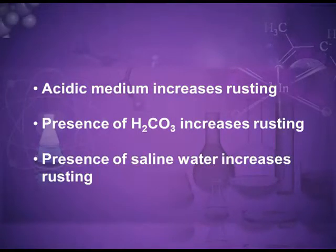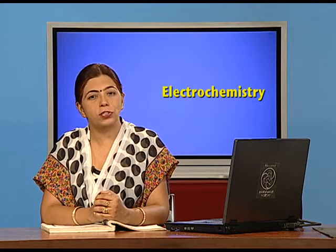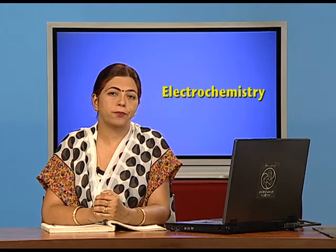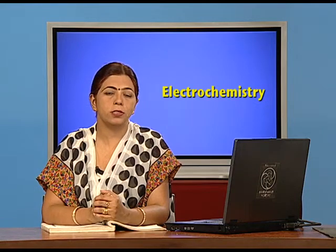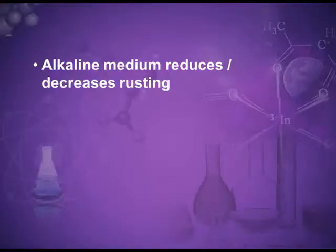Now, the conditions that increase rusting: if the medium is acidic, it increases rusting. If the water is saline it also increases rusting, because saline water has many ions. An increase in CO2 concentration also increases rusting, because CO2 dissolves in water to form carbonic acid, which provides hydrogen ions. However, an alkaline medium reduces rusting, because it produces OH⁻ ions that neutralize the hydrogen ions required for rusting.